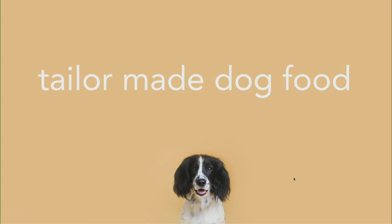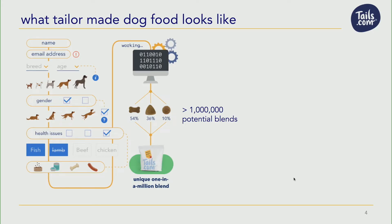What we offer is tailor-made dog food. We're a subscription service — if you have a dog, you sign up and tell us a lot of information about your dog: their breed, their gender, whether they're neutered or not, health issues, what they're used to feed, all of these things. Then we have an algorithm which works out, from all of our different dry food recipes, which combination is going to be the right one for your dog that month.